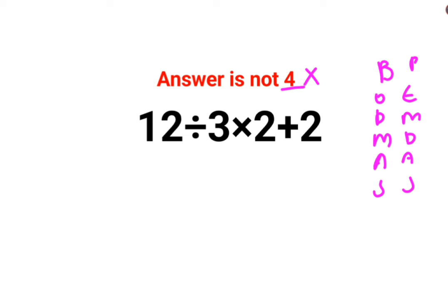So now please understand, whenever you have a question which has division and multiplication, both division and multiplication hold equal weightage. So in that case, you will always go from left to right.